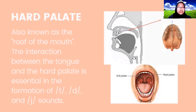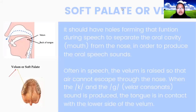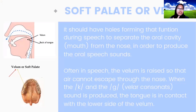Next is the soft palate or velum. It functions during speech to separate the oral cavity or mouth from the nose in order to produce oral speech sounds. Often in speech the velum is raised so that air cannot escape through the nose. When the K and G velar consonant sounds are produced, the back of the tongue is in contact with the lower side of the velum, as we can see in the picture.